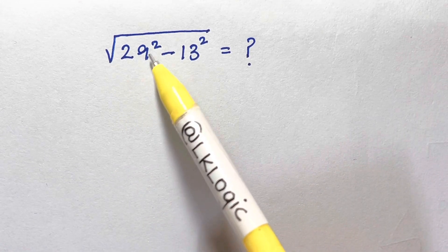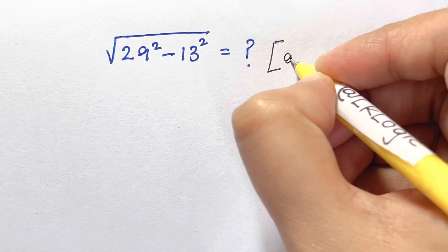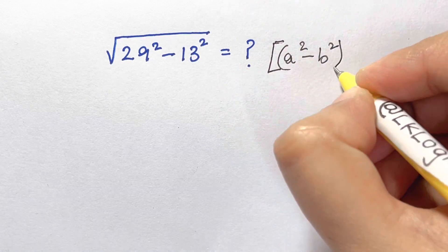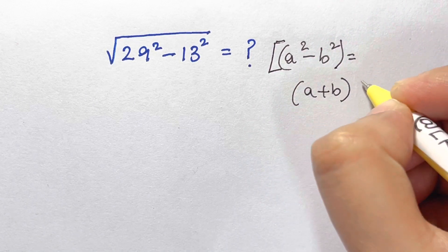How would you solve under root of 29 squared minus 13 squared? As we know this identity, a squared minus b squared is equal to a plus b times a minus b.